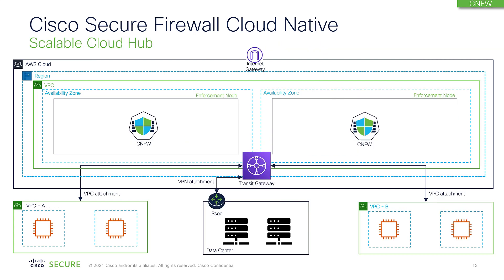The other use case is if you want to offload your VPN infrastructure from your data center to AWS cloud, you can do that with Cisco Secure Firewall Cloud Native by deploying a cluster in the cloud. Once you connect it to your cloud environment, you can then take your connection back to your data center either by using a transit gateway, CSR, or an IPsec tunnel. There are multiple methods of connecting your cloud environment back to your data center.